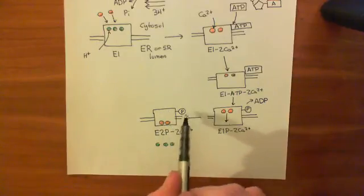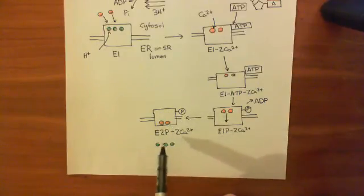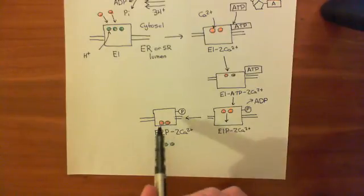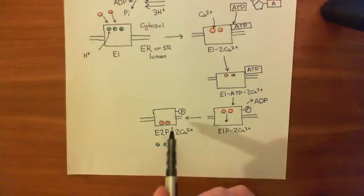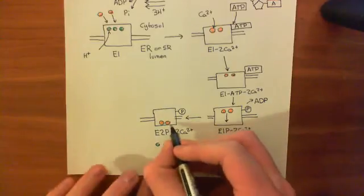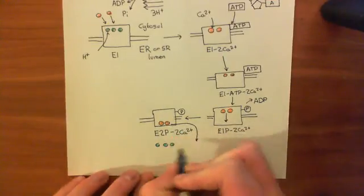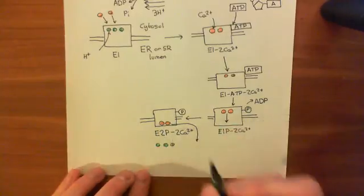It still has the phosphate group attached, and in the E2 conformation, it prefers to have protons bound to it rather than calcium. So the calcium ions are going to come off and the protons are going to come in. The calcium goes into the endoplasmic reticulum lumen, and the protons now bind here.